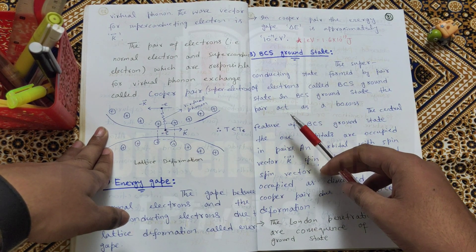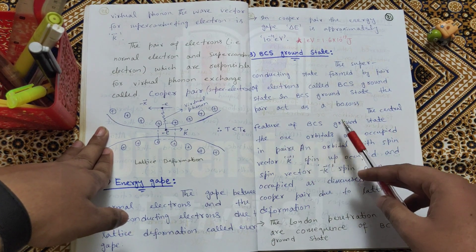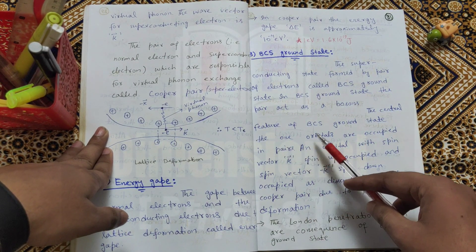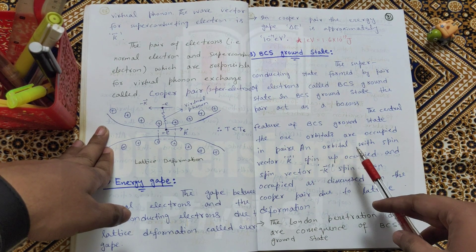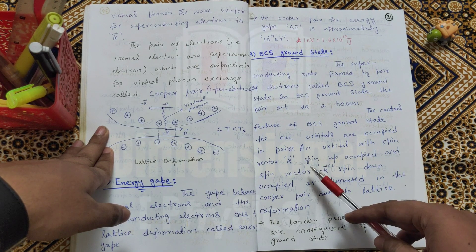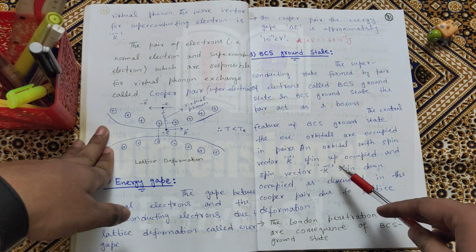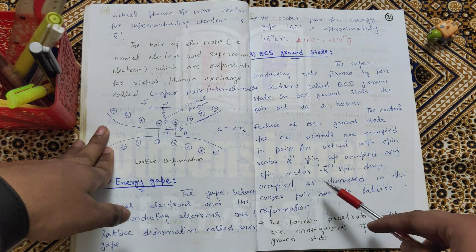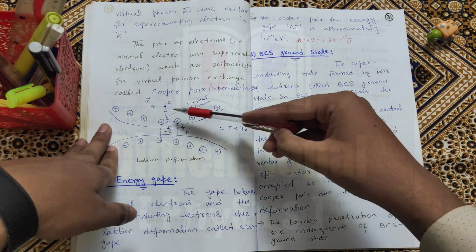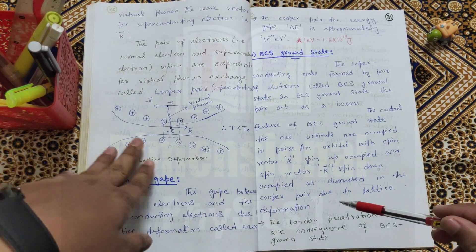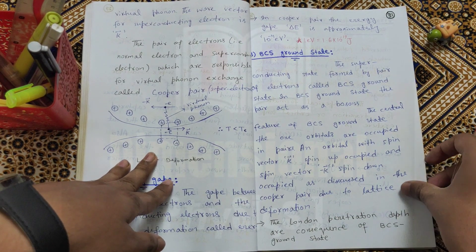In the BCS ground state, the pair acts as a boson. The central feature of the BCS ground state is that orbitals are occupied in pairs: an orbital with spin vector k spin-up is occupied, and spin vector minus k spin-down is also occupied, as discussed in Cooper pairs due to lattice deformation. The London penetration depth is also a consequence of the BCS ground state.